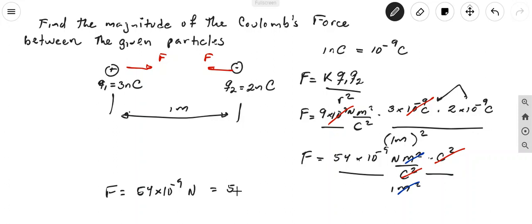But when you move the decimal point one place to the left, now the 10 to the negative 9 becomes 10 to the negative 8. So this would be 5.4 times 10 to the negative 8 newtons.